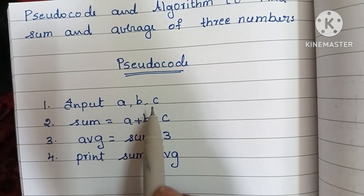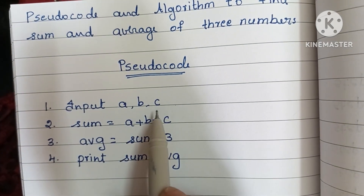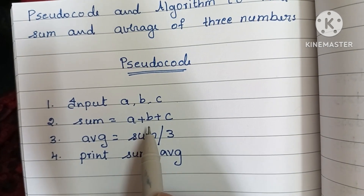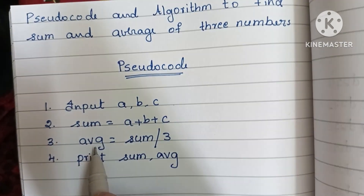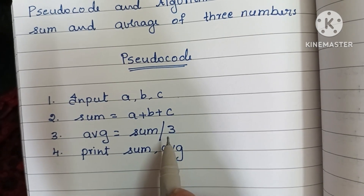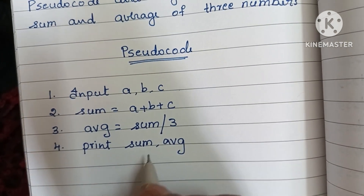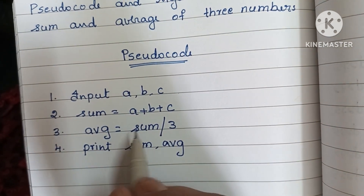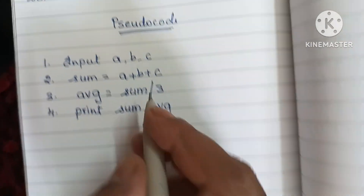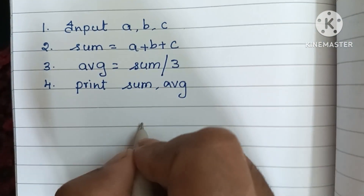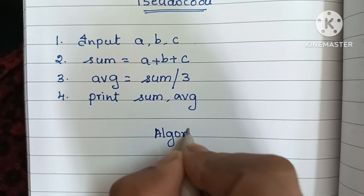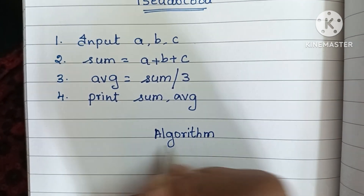Let's see the pseudocode to find sum and average of three numbers. First, input three numbers: a, b, and c. Next, sum is equal to a plus b plus c. Then, avg is equal to sum divided by three. Finally, print sum and average. This is the pseudocode to find sum and average of three numbers.